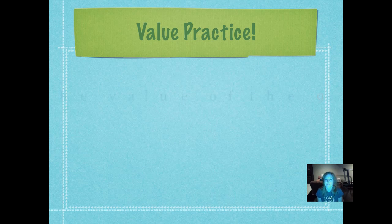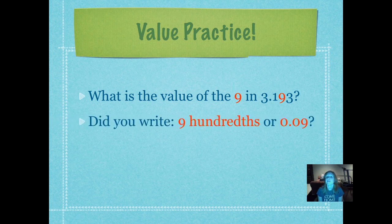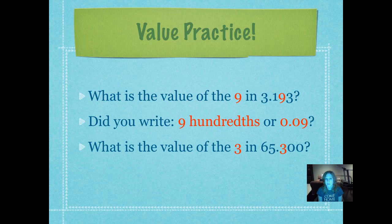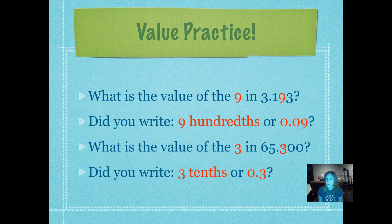Let's do some value practice. What is the value of the nine in 'three and one hundred ninety-three thousandths'? Pause it so you can write it down. Did you write 'nine hundredths' or '0.09'? Those are both read 'nine hundredths,' so either way you wrote them would be correct. What is the value of the three in 'sixty-five and three hundred thousandths'? Pause it so you can write it down. Did you write 'three tenths' or '0.3'? Either one of those is a correct way to represent the value of that three.